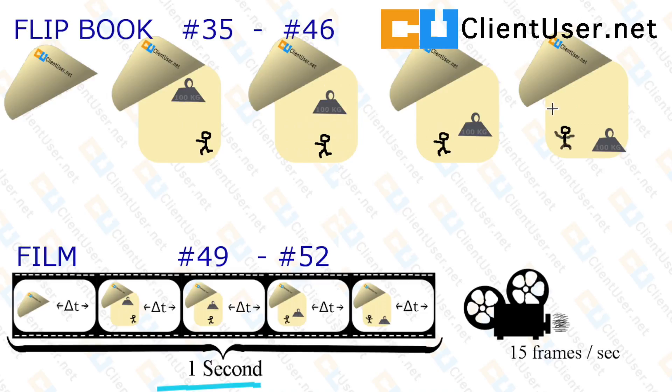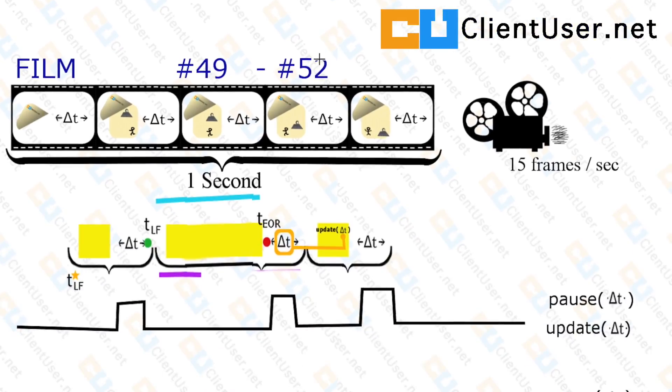We then in tutorials 49 to 52 tried to introduce some sort of order. We took each page from a flipbook and put it inside a film frame, and then we enforced a film length time in each frame according to whichever rate we wanted.